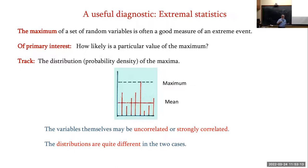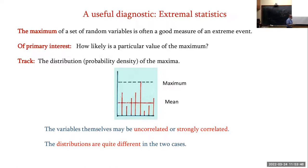The tool is extreme value statistics. Here's a bunch of random variables — heights — the mean is familiar and the maximum is easy to imagine. The important thing is that the variables may be uncorrelated or correlated, and depending on that, the distributions of the maximum are very different. There are very nice results for the uncorrelated case.